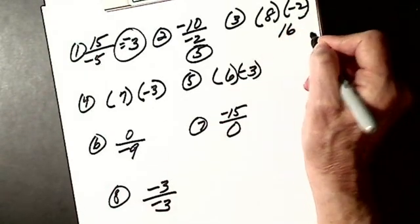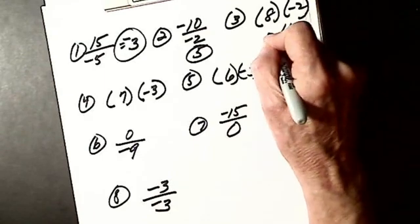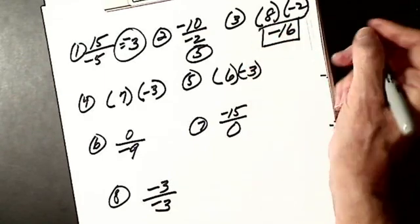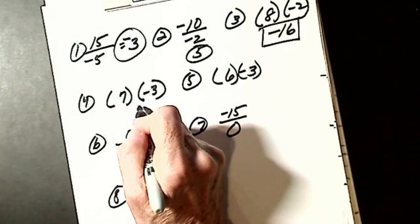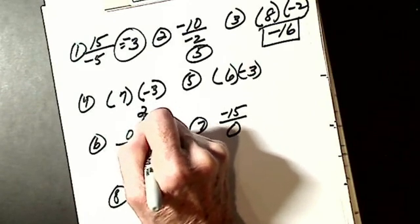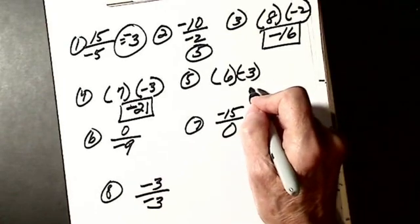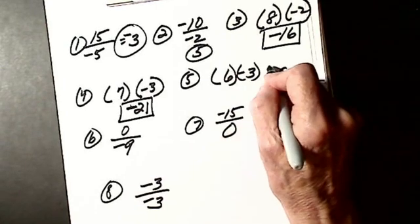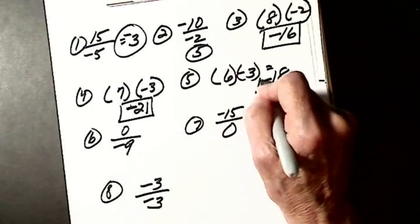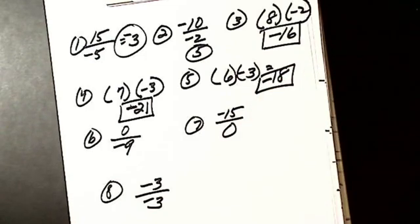2 times 8 is 16, and it's going to be negative. 3 times 7 is 21, unlike signs, has to be negative. 3 times 6 is 18, unlike signs, negative.